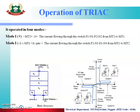The next one is mode 1 negative, in which MT2 is negative and MT1 is positive. If MT1 is positive then MT2 carries the negative potential. So the current will flow from higher potential to lower potential. Therefore, with MT1 positive, the current path is P2, N1, P1, N4 — that is from MT1 to MT2.